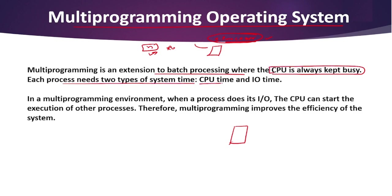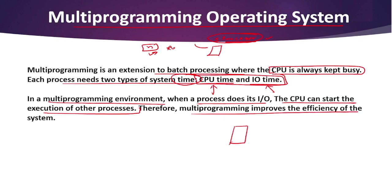Each process needs two types of system time: CPU time and input/output time. This is a very important and frequently asked point. In a multi-programming environment, when a process does its input/output, the CPU can start the execution of another program. Therefore, multi-programming improves the efficiency of the system. The CPU always has one process to execute, and response time can also be reduced when we use multi-programming.